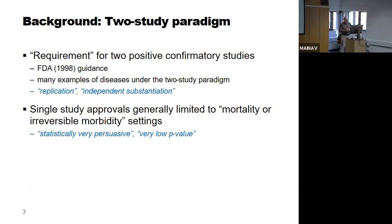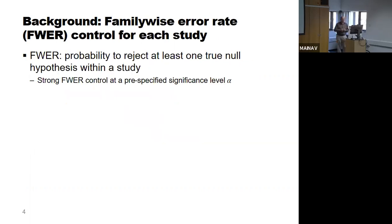The general situation is that we need two positive confirmatory studies. Another important aspect in drug approval is that you need to control your type one error rate within a study. More specifically, we need to control the family-wise error rate — the probability to reject at least one true null hypothesis — and we need strong family-wise error rate control under any configuration of the unknown parameters.